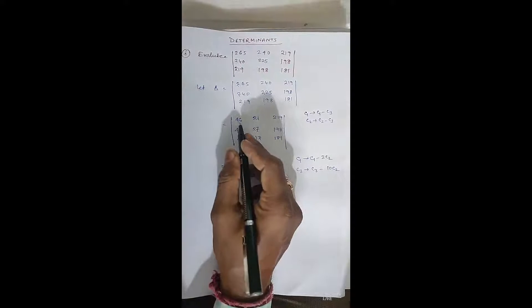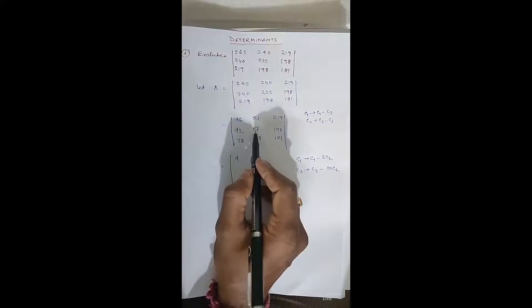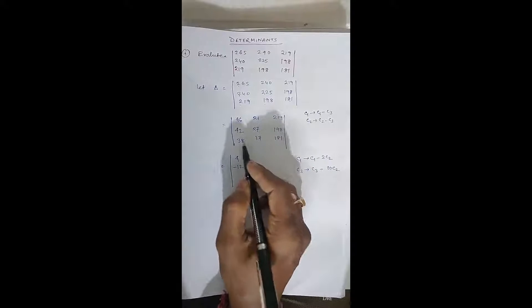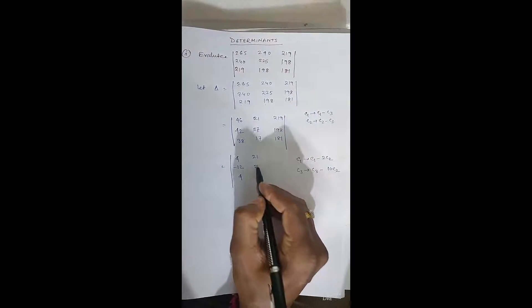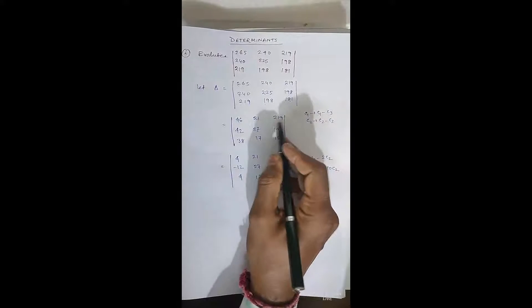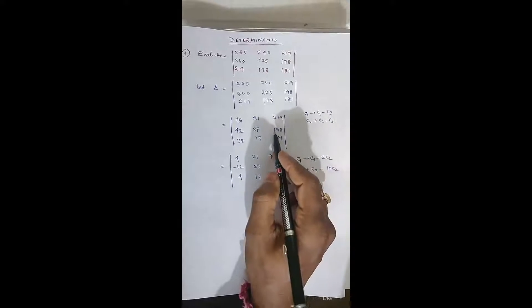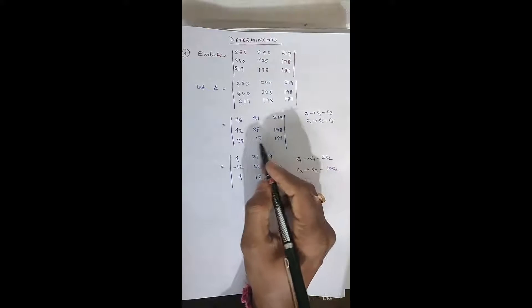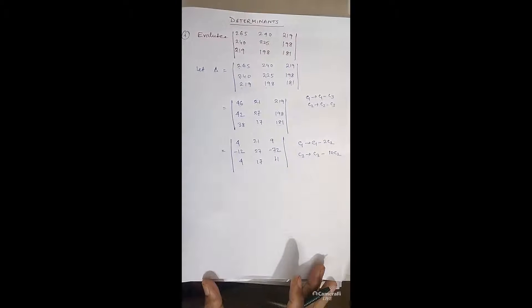Applying the operations: 46−2×21=4, 42−2×27=−12 wait — 46−42=4, 42 remains, 21 remains; then C3: 219−210=9, 198−270=−72, 181−170=11. So we now have the matrix: row 1: 4, 21, 9; row 2: −12, 27, −72; row 3: 4, 17, 11.